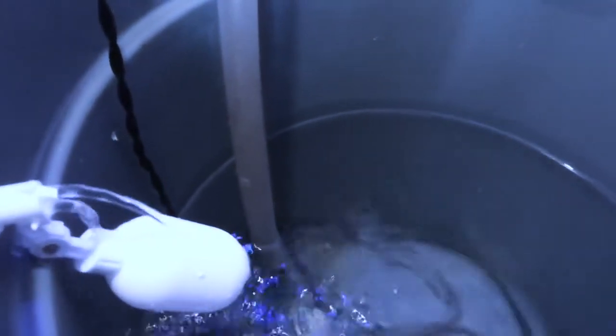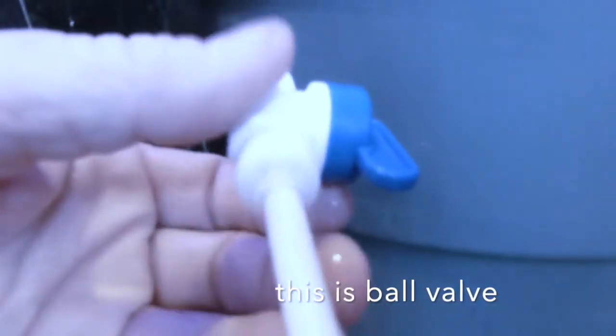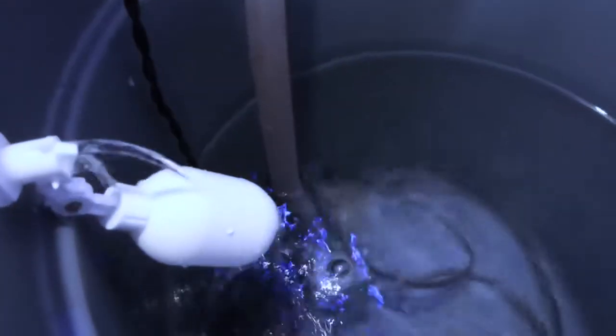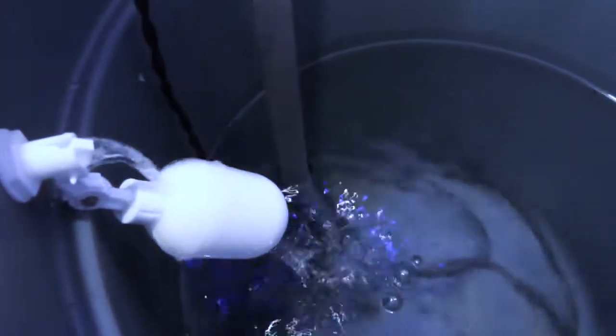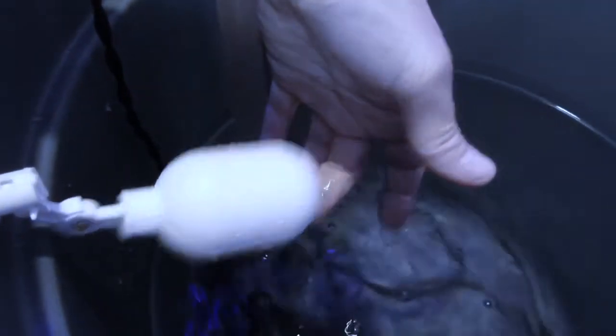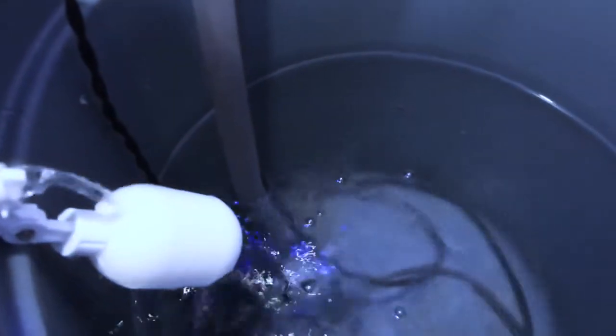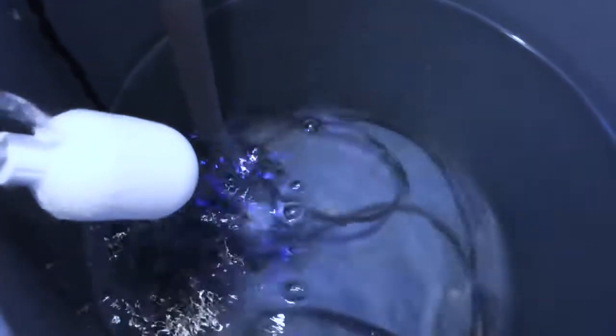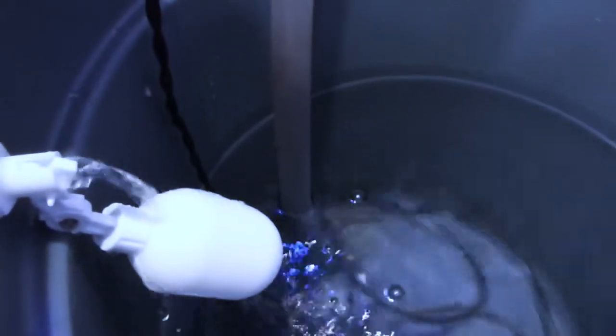I leave my ball valve on my RO line in the off position unless I'm making water. Once this is full and hits this, I will turn it off just for safety's sake. But yeah, this will help prevent those floods that you've fought for all that time.